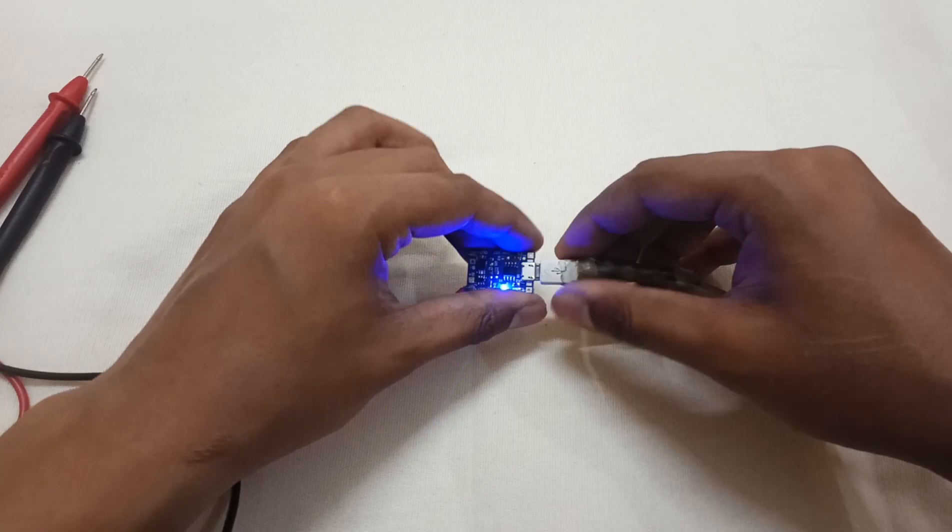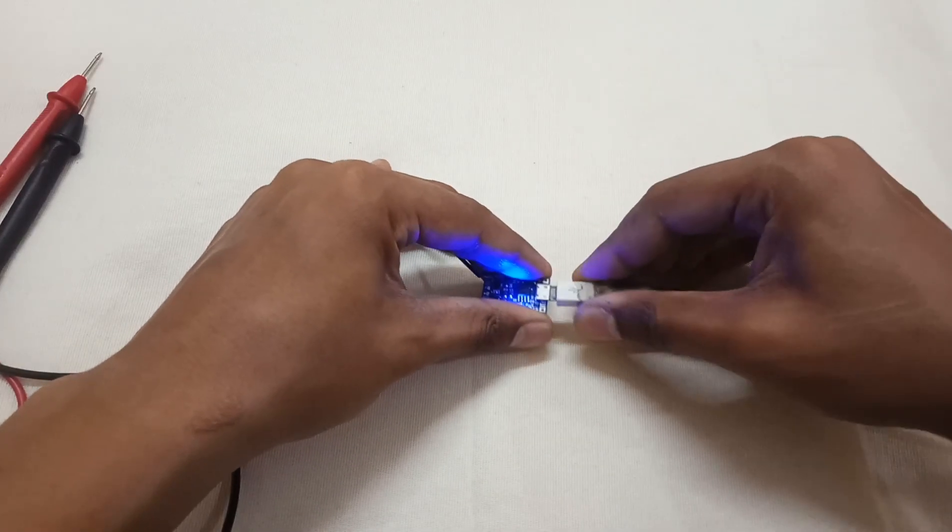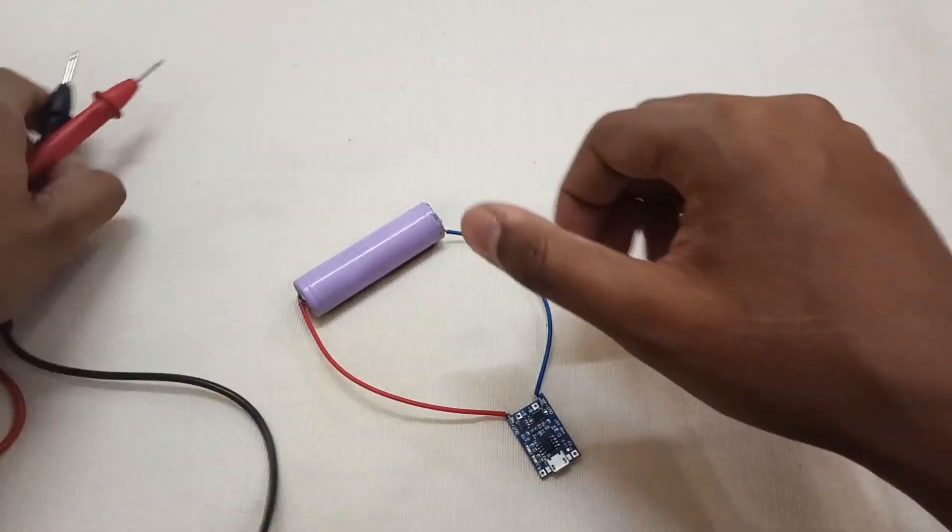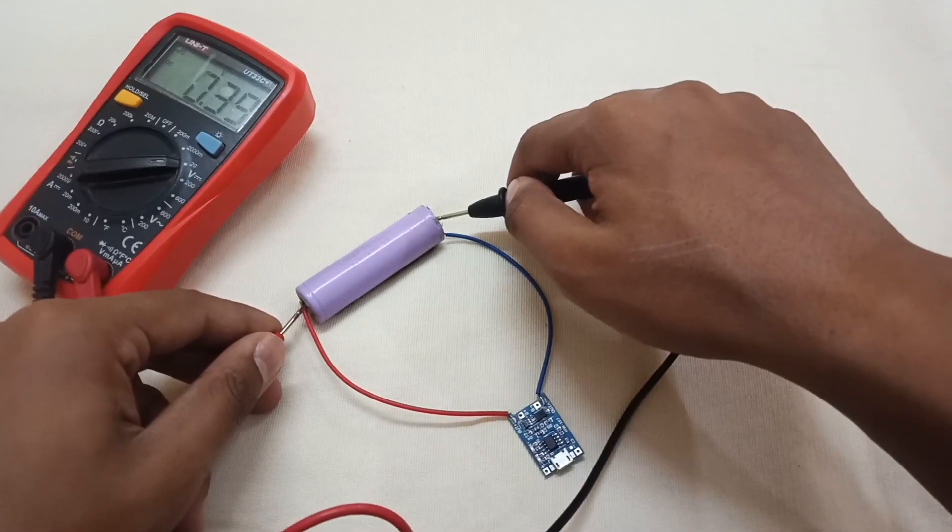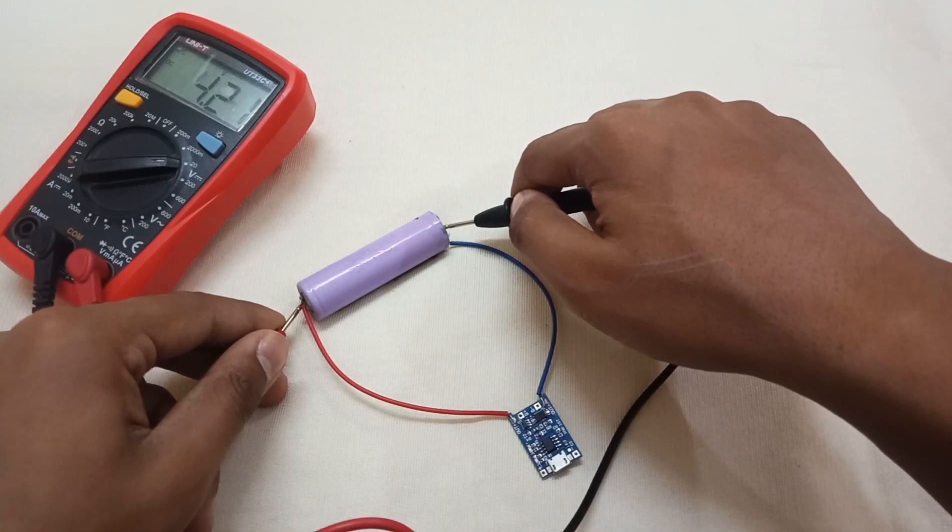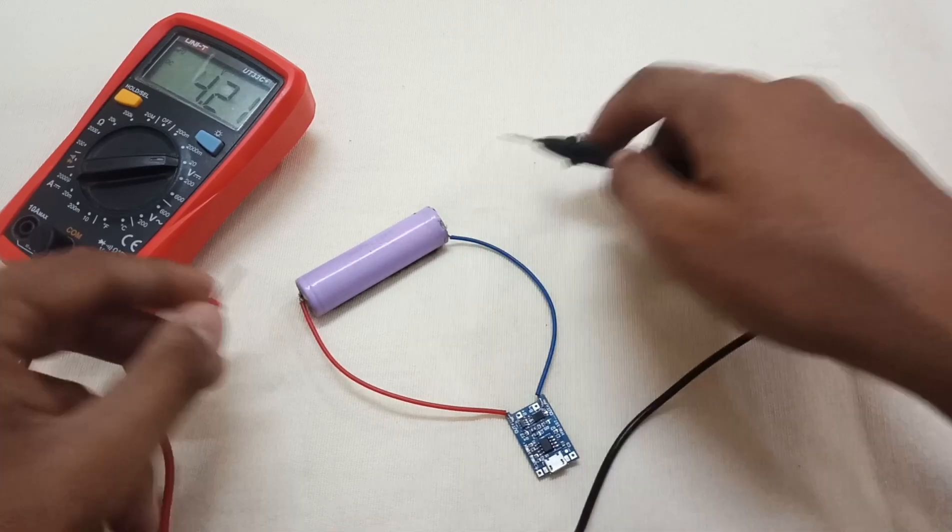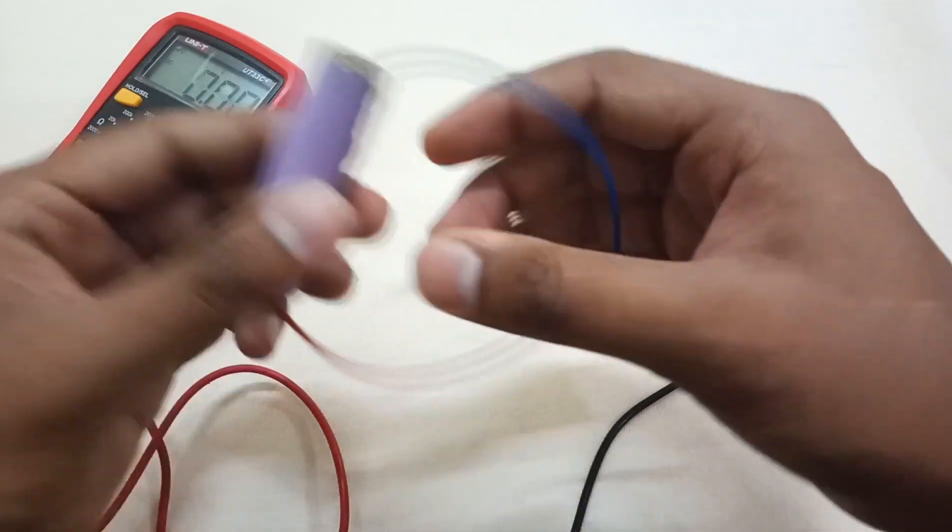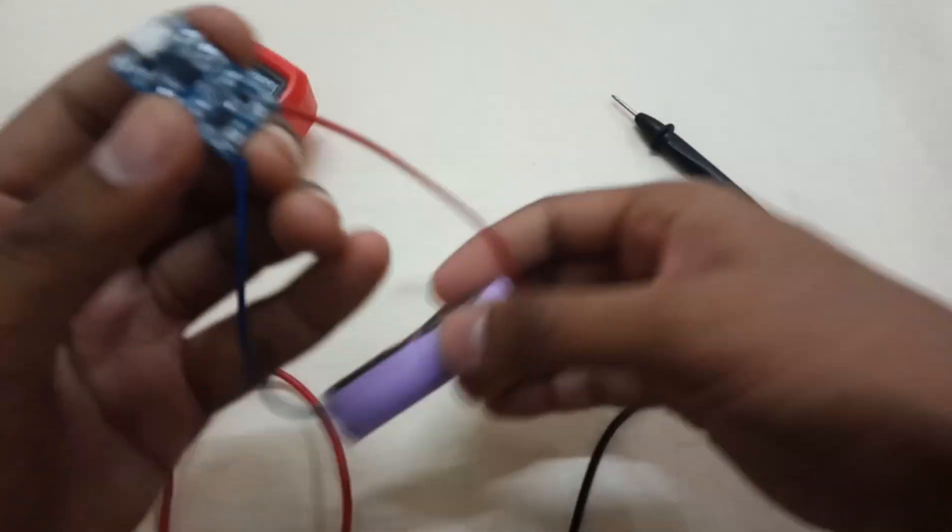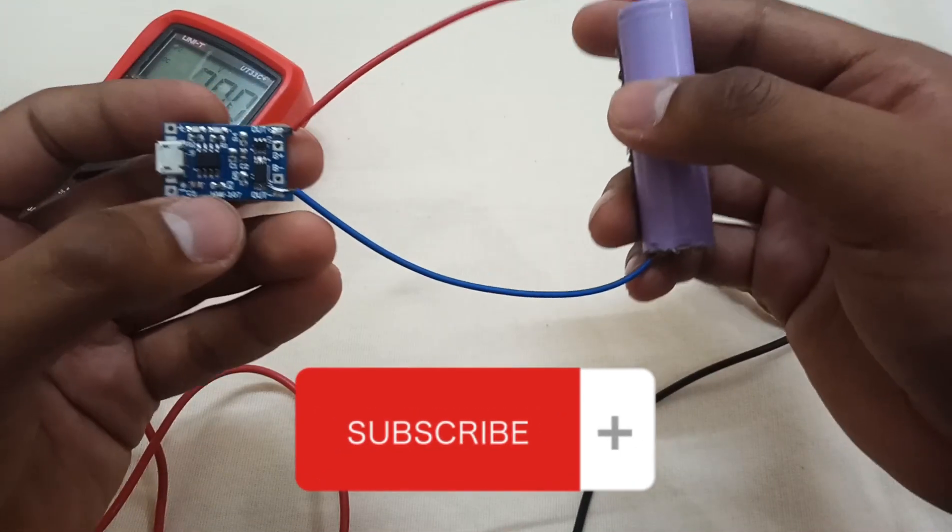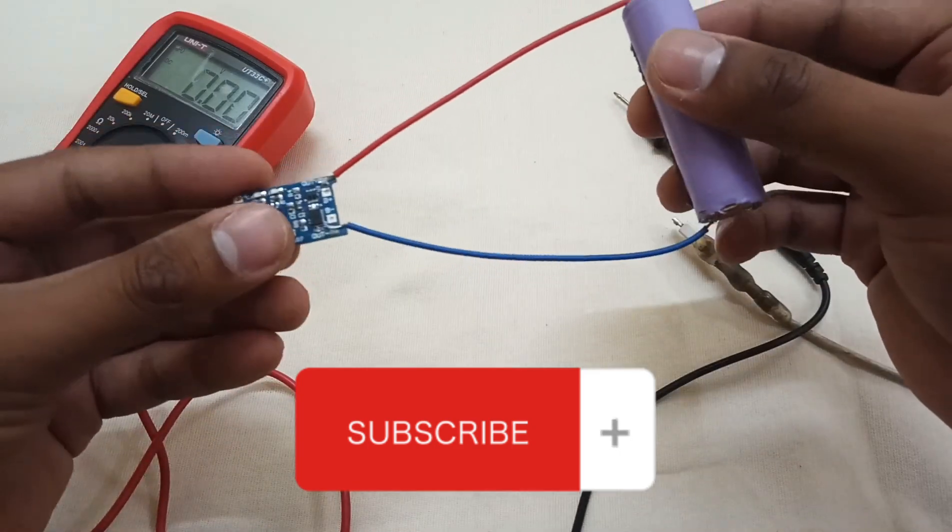Let's disconnect it and measure the voltage again. It's 4.21 volts. As you can see, the battery is now fully charged. This module is best for charging single lithium ion cells.